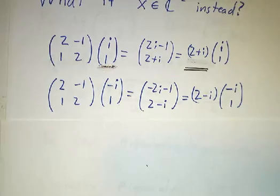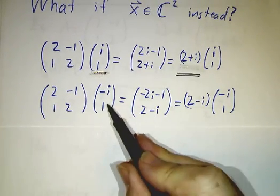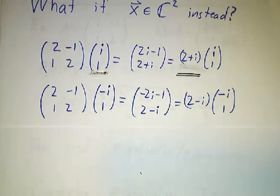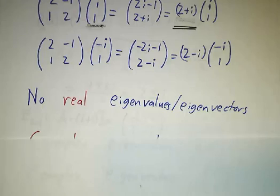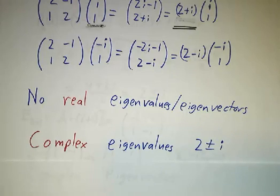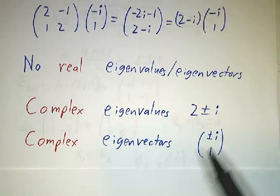And likewise, if you look at (-i,1), then that's also an eigenvector. Only now the eigenvalue is 2-i, rather than 2+i. So the upshot is that there are no real eigenvalues or eigenvectors to this matrix. But there are complex eigenvalues, namely 2 ± i. And there are complex eigenvectors, namely (±i, 1).